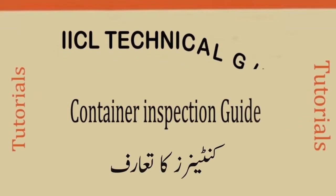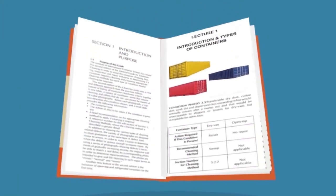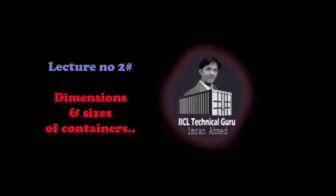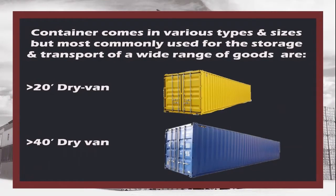Welcome to the Container Inspection Tutorials. In this tutorial we are going to learn about dimensions and sizes of general purpose containers. Containers come in various types and sizes, but the most commonly used for the storage and transport of a wide range of goods are 20 and 40 foot dry van containers.